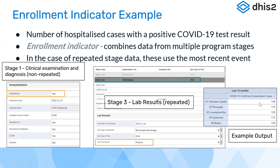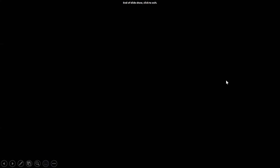The difference is that yesterday we could not get an aggregate output like this — we were only able to get a line list of patients. If we wanted a table with areas as the first column showing how many people were COVID-19 confirmed and hospitalized per province, we could not generate that yesterday using event reports because enrollment analytics did not allow pivoting. But now with program indicators we can. With that, we come to the end of the presentation and will move to the demonstration. Any questions?